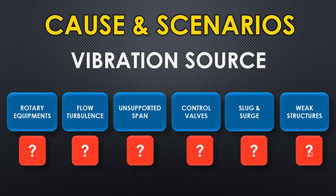The last vibration source is weak structural design. If the structure is not capable of handling the piping system, there will be vibration issues. The structure has to be designed strong enough for the piping, but not over-designed either, since unnecessarily increasing design strength raises costs. It must at minimum meet the piping design criteria — the structure should be designed to handle all relevant loads.